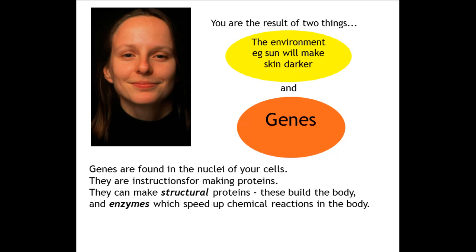Your genes basically are a blueprint. They enable you to make things called proteins, and proteins are the building blocks for life. They are the structures that you are made of and they are the chemicals that control the reactions in your body. Your genes are a set of instructions for making these proteins.